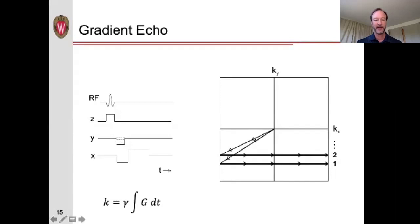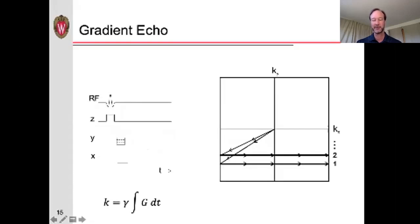The gradient is then turned back to a positive direction, and the Y gradient is turned off so we don't move in the Y direction anymore. We then scan along the X direction and acquire the signal. Then we wait, re-excite, putting us back into the center of k-space. We apply a slightly smaller phase encoding gradient, putting us a little less far in the k-Y direction, and again apply the gradient in the X direction, acquiring the next line of k-space. In this way we collect all the different lines in k-space, and by doing a Fourier transform we can recover our image.